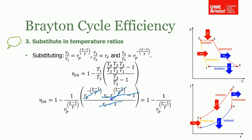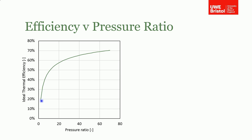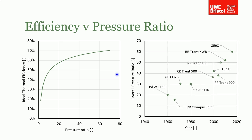This is shown graphically: ideal thermal efficiency on the vertical axis versus pressure ratio on the horizontal axis, confirming that increasing pressure ratio increases ideal thermal efficiency. A historical timeline also shows that from early Pratt & Whitney gas turbines through to the latest GE variants, pressure ratio has increased threefold — from around 20:1 up to 60:1 — driving ideal thermal efficiency from roughly 56–57% in the late 1950s up toward 69–70%.